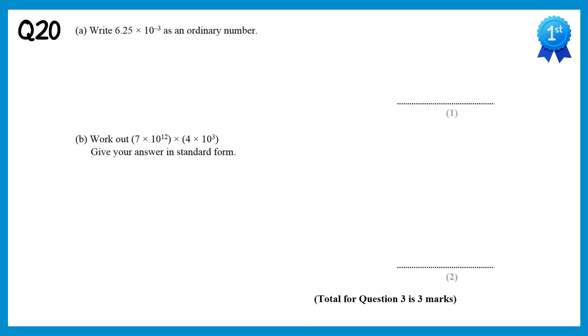In this question we have a number in standard form, and we need to write it as an ordinary number. So start with 6.25, and then the power is 10 to the power negative 3. This means divide our number by 1000, or move the digits three places to the right. So let's move one place, a second place, and a third place. So we end up with 0.00625.